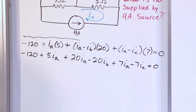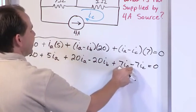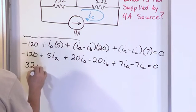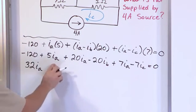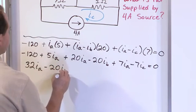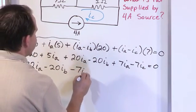And then we collect terms. So we have IA terms: 5 plus 20 is 25 plus 7 gives me 32. So I'm going to have 32 IA. IB is this one, so I have negative 20 IB. IC, the only one I have is this one, so it's minus 7 IC.